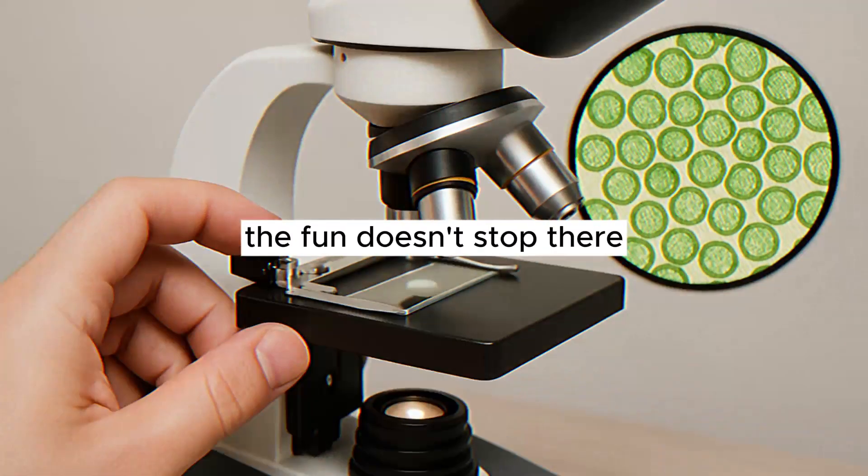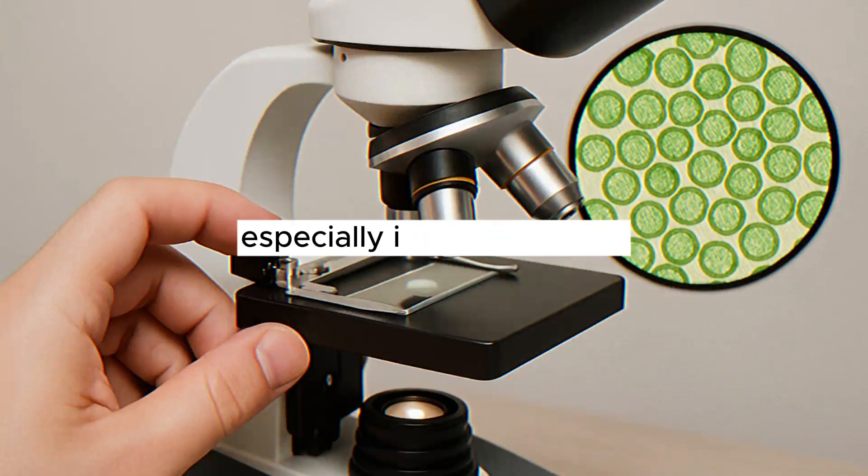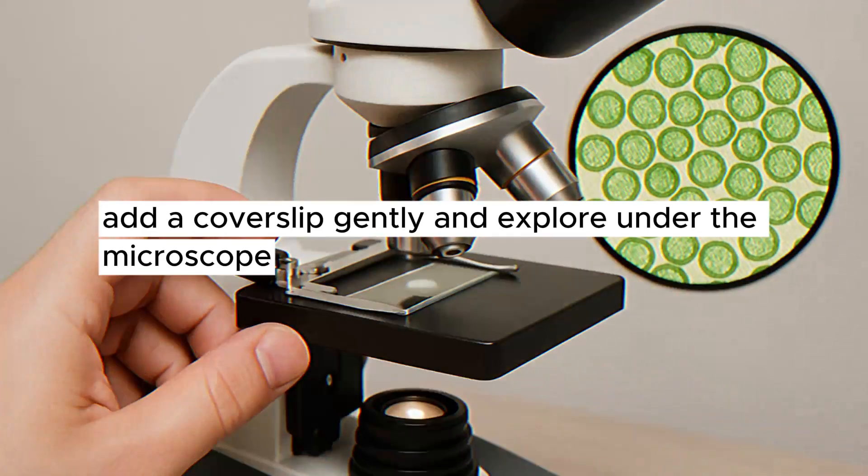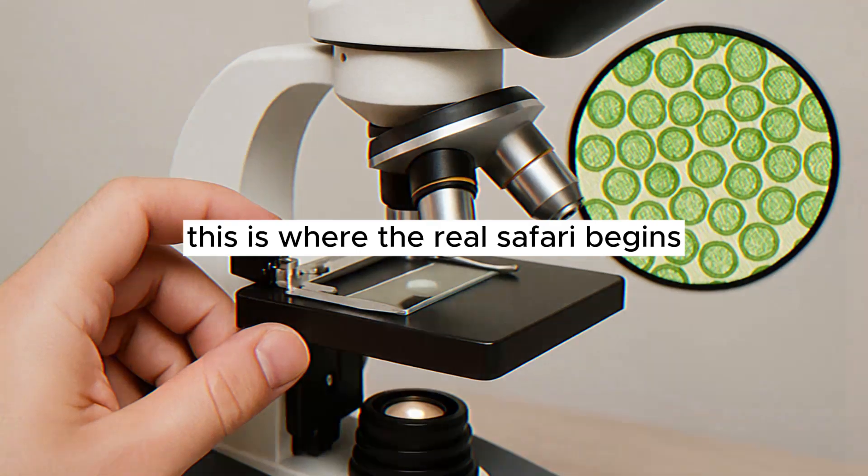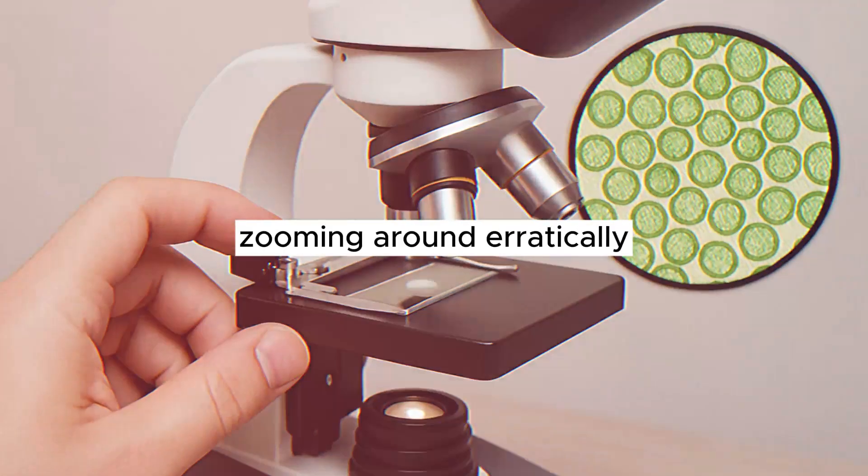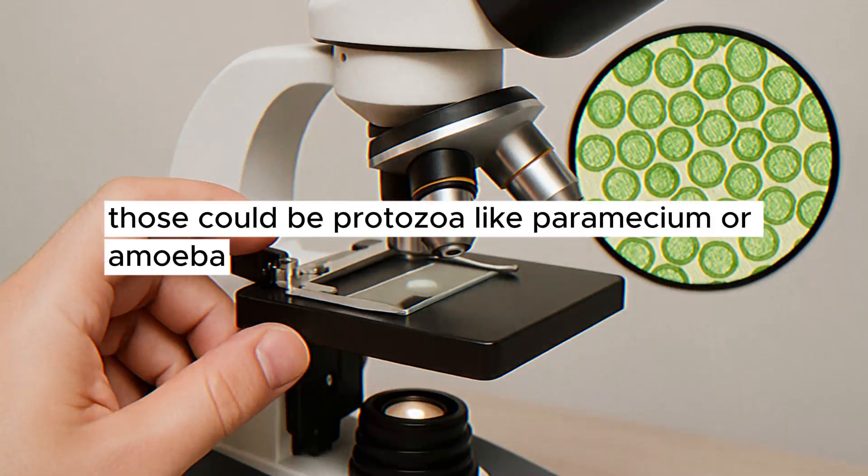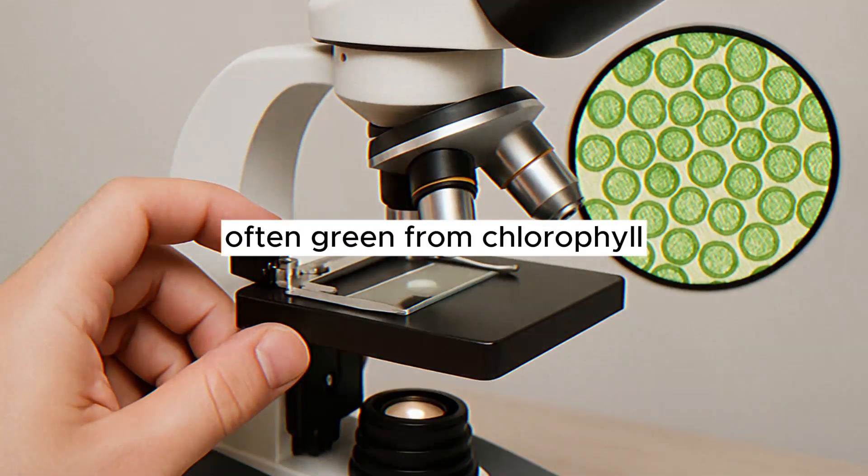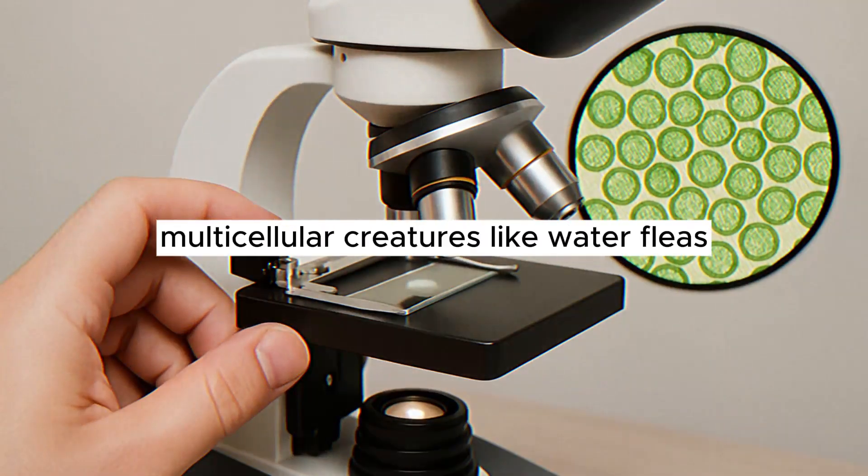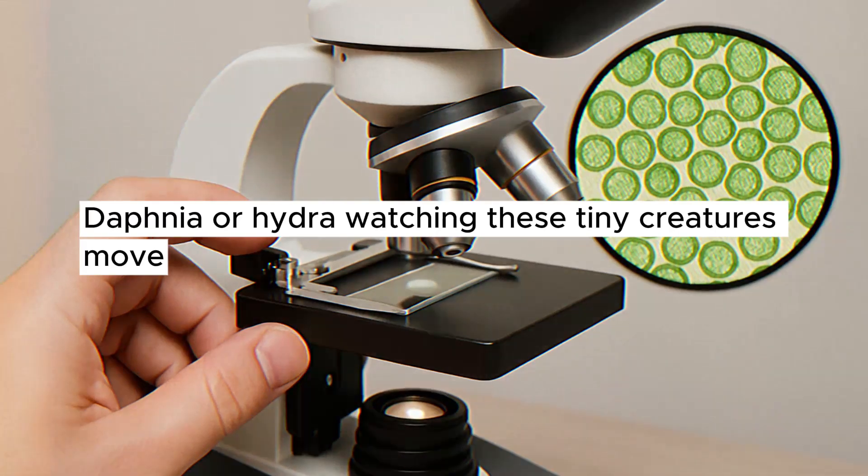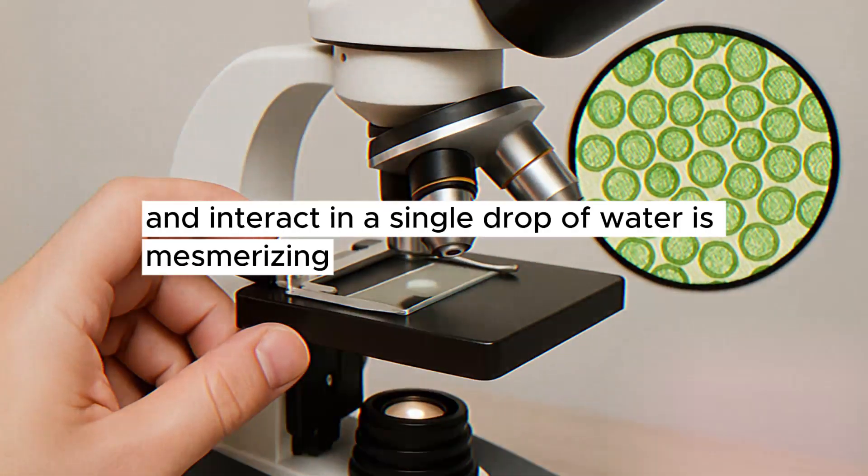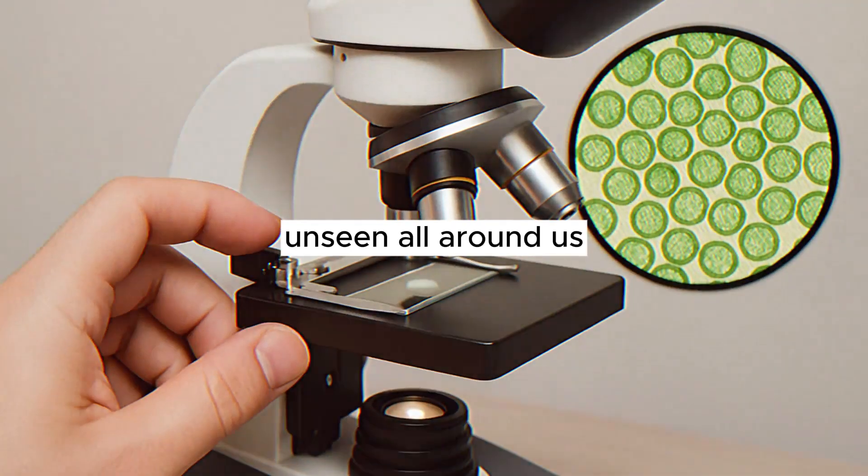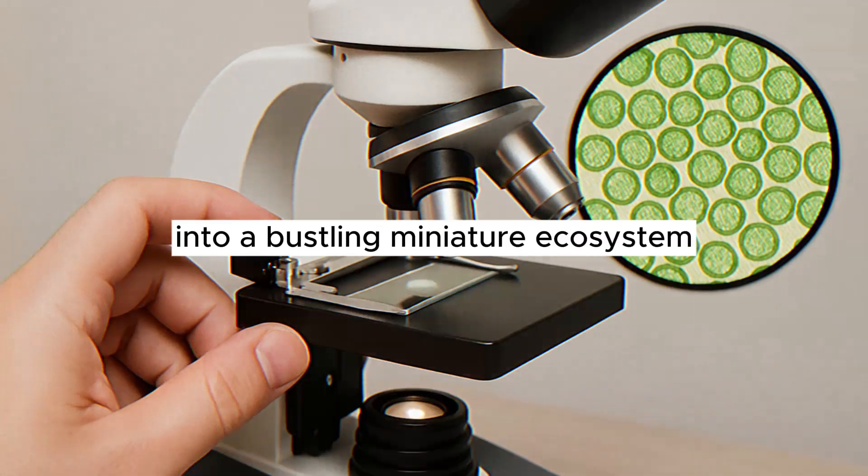The fun doesn't stop there. Grab a drop of pond water or water from a flower vase, especially if it's a bit green. Put a tiny drop on a slide. Add a cover slip, gently, and explore under the microscope. This is where the real safari begins. You might zoom in and see single-celled organisms zooming around erratically. Those could be protozoa like paramecium or amoeba. You might see algae, which could be single cells or chains of cells, often green from chlorophyll. You might even see tiny multicellular creatures like water fleas, daphnia, or hydra. Watching these tiny creatures move, feed, and interact in a single drop of water is mesmerizing and really drives home how much life exists unseen all around us. The microscope transforms that ordinary drop into a bustling miniature ecosystem.